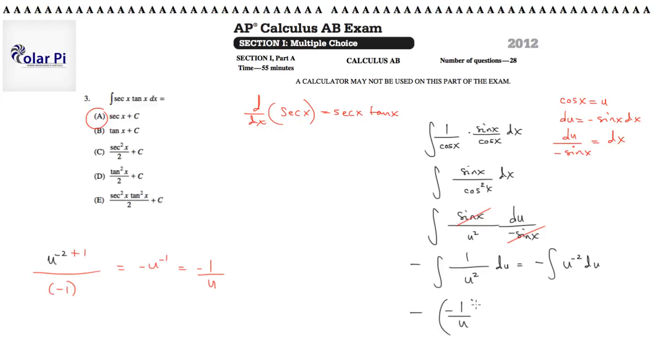And because this is an indefinite integral, you'd have to write plus c, because it doesn't have limits of integration. And so the minus minus cancels, and c is allowed to be negative from the start, so 1 over u plus c.